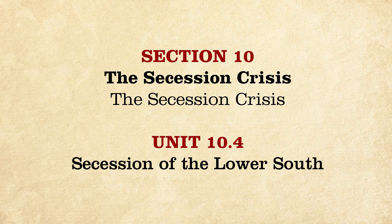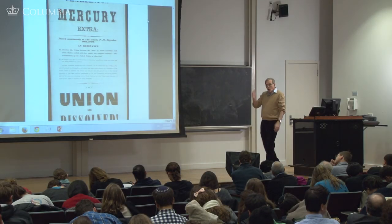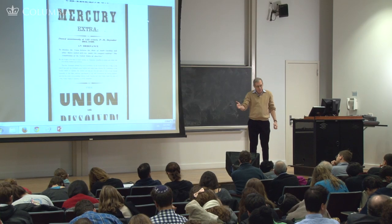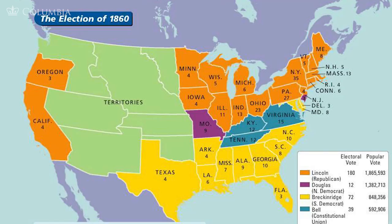In the election of 1860, remember, there was no unified South. The South was divided. The Upper South went for Bell; the Lower South went for Breckenridge. Breckenridge, supposedly the most radical, did not receive a majority of the votes taking all the slave states together.